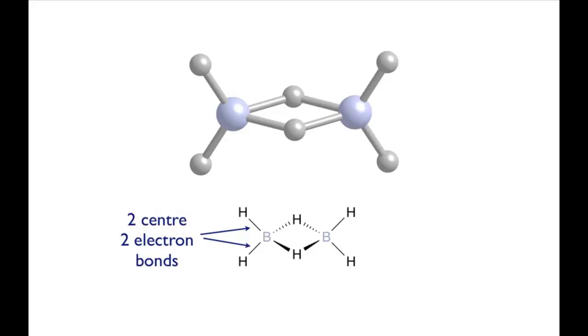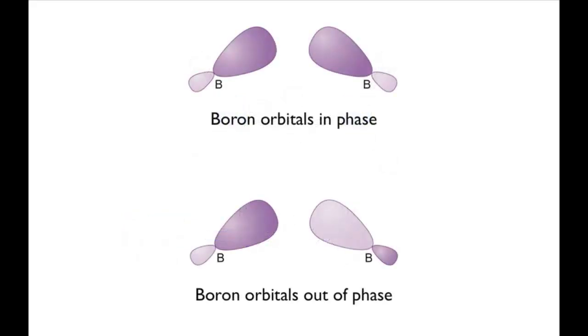Using molecular orbital theory, the first step of this approach is to look at the combinations of the orbitals on the two boron atoms. These orbitals can either be in phase with each other or out of phase with each other.